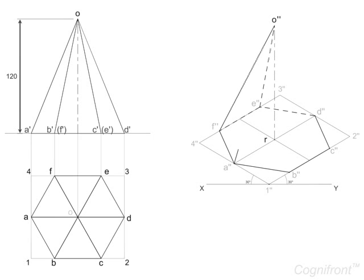Okay, let's join the apex O'' with vertices of the base. Now take a look at the complete isometric view of the pyramid. Observe the invisible edges are shown as dashed lines.